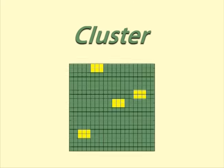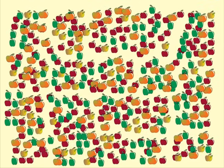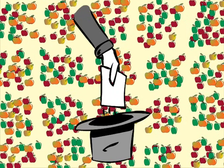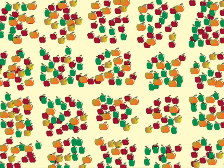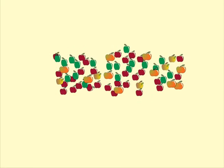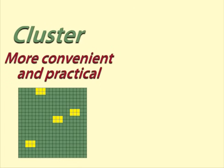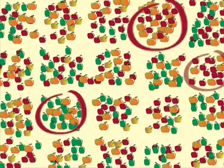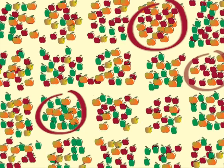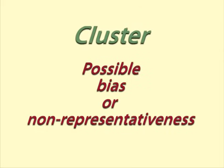In cluster sampling the population is divided into clusters which are then chosen at random. For example, departments of a business can be clusters, or suburbs within a city. Within each cluster, all of the objects are included in the sample. Cluster sampling can be more convenient and practical than simple random sampling. However, if the clusters are different from each other with regard to the elements we are measuring, it can lead to bias or non-representativeness.